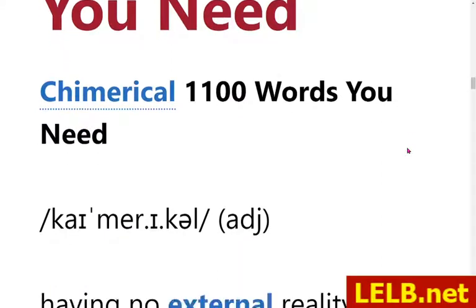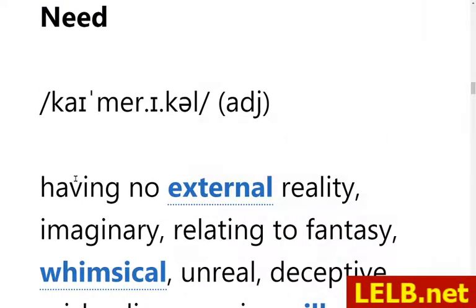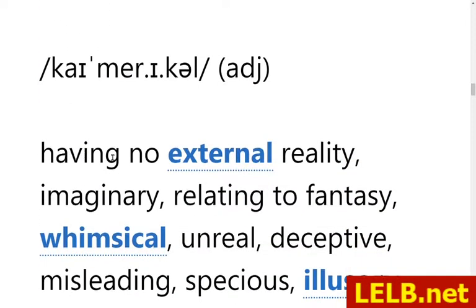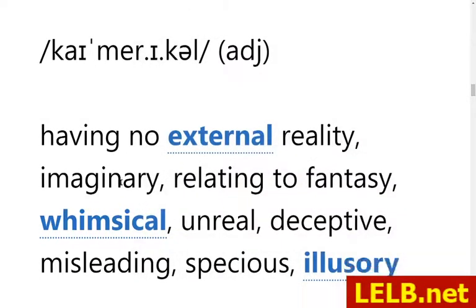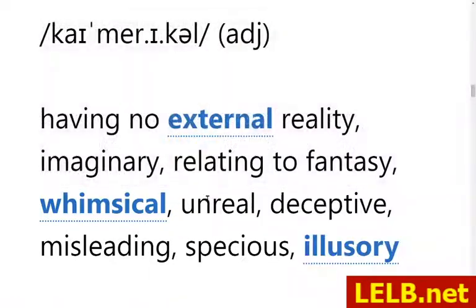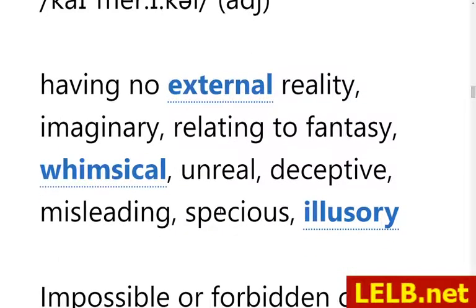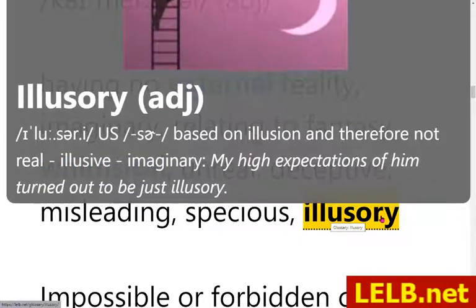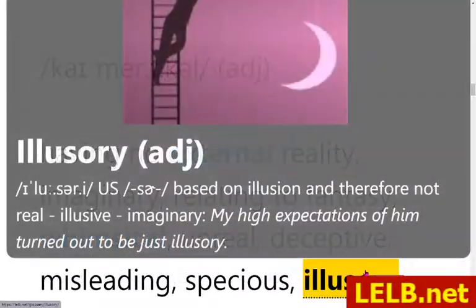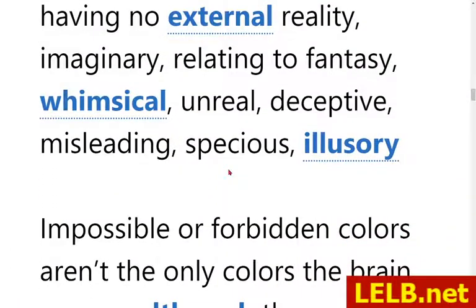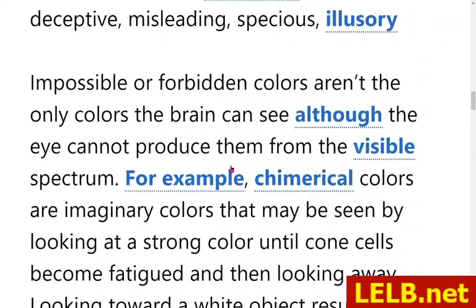Chimerical is a very formal word, but useful to know. Its meanings include: having no external reality, imaginary, relating to fantasy, whimsical, unreal, deceptive, misleading, and specious. Pay attention — it's not 'spacious,' it's 'specious,' which means dummy, unreal, and illusory. Illusory also means imaginary.